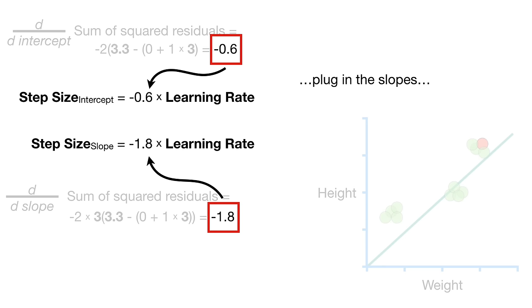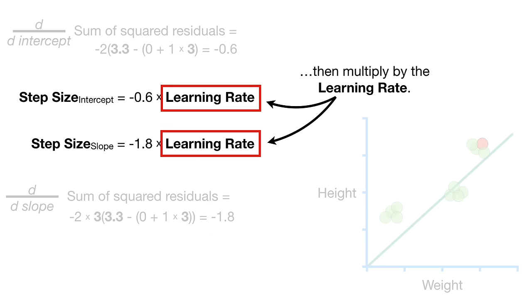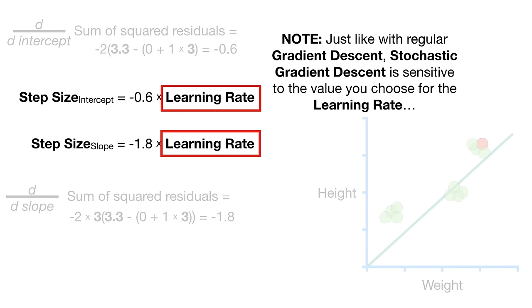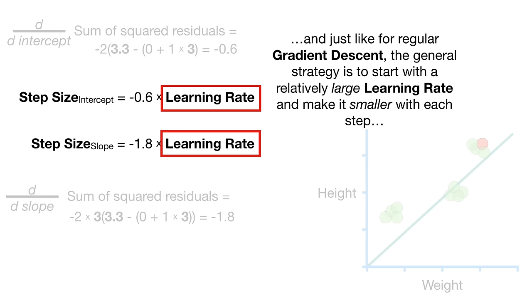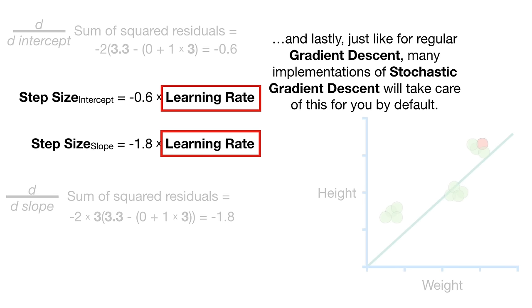Stochastic gradient descent is especially useful when there are redundancies in the data. For example, we have 12 data points, but there is a lot of redundancy that forms 3 clusters. So we start with a line with the intercept equals 0 and the slope equals 1. Then we randomly pick this point. So we plug in the weight, 3, and height, 3.3. Do the math, plug in the slopes.